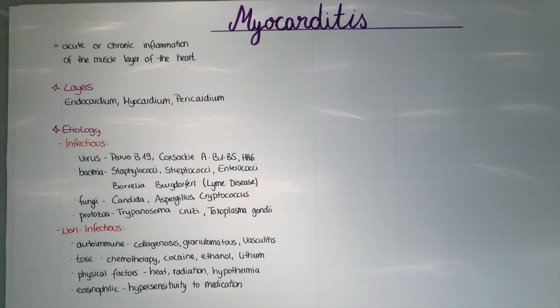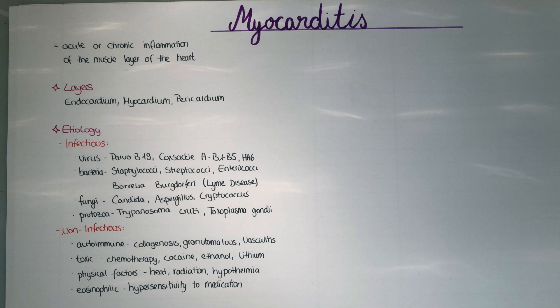Myocarditis can also be caused by fungi and protozoa. Fungal myocarditis is especially seen in immunocompromised patients and is caused by Candida albicans, Aspergillus, and Cryptococcus. Protozoa that cause it include Trypanosoma cruzi, the causative agent for Chagas disease, which is the main cause of myocarditis in South America. Also Toxoplasma gondii, especially dangerous for pregnant women and their fetuses, and Trichinella spiralis, a parasite that enters muscles and builds calcified cysts — which can also form within the heart tissue and cause granulomatous inflammation.